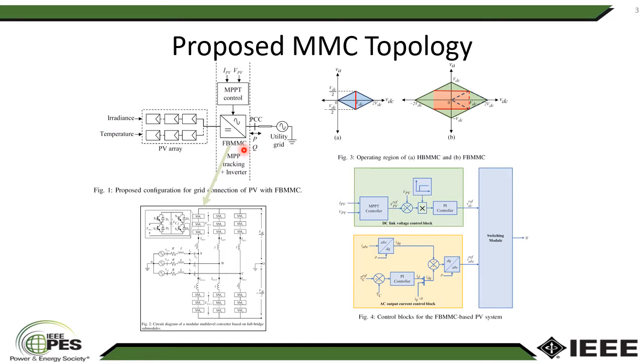The FBMMC takes the DC output power and converts it into AC output power of desired quality to transfer to the utility grid. The FBMMC block acts both as maximum power point tracking unit as well as DC to AC inverter.